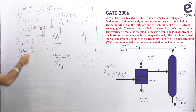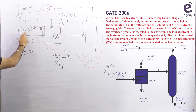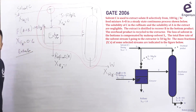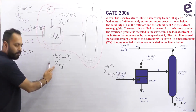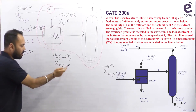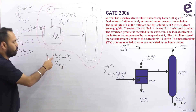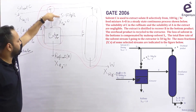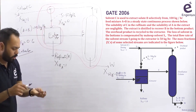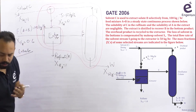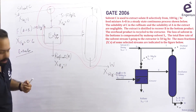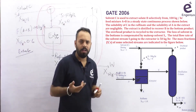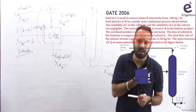Now count the number of unknowns. The feed flow rate is known and both compositions are known: X_fA is 0.6, so X_fB is 0.4 — this stream is completely known. Stream R has X_rA equal to 1, so it is pure A, but the flow rate is not known — that's one unknown. Let me also explain how many components are present in each stream, which will make the degree of freedom analysis easier.